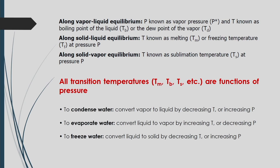Along the vapor-liquid equilibrium line, pressure is known as vapor pressure (denoted P* or Pv), and the equilibrium temperature is known as the boiling point of the liquid or dew point of the vapor. Along the solid-liquid equilibrium line, temperature is the melting or freezing point at a particular pressure. Along the solid-vapor equilibrium line, temperature is known as the sublimation temperature (Ts at pressure P). All transition temperatures — TM, TB, TS — are functions of pressure.